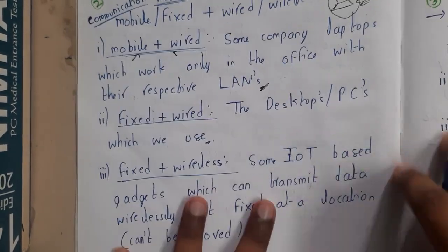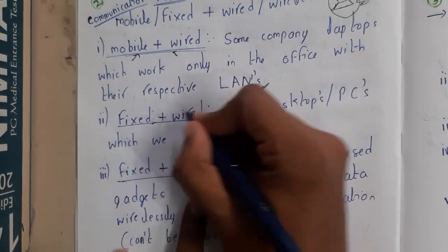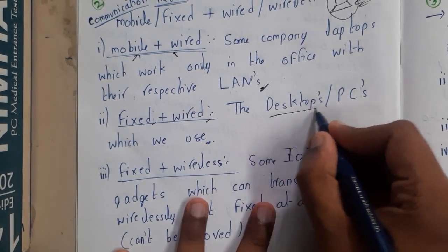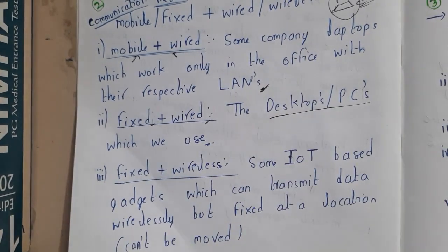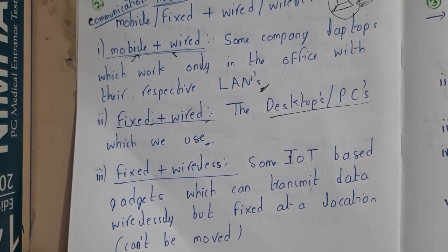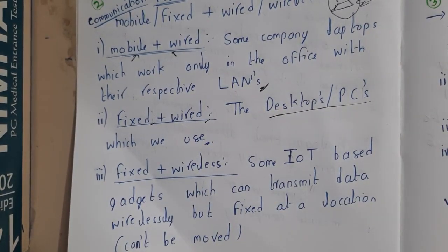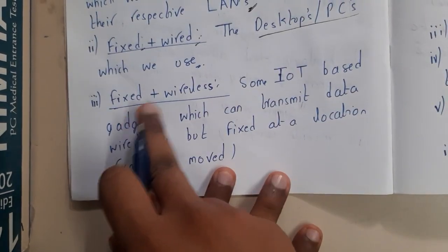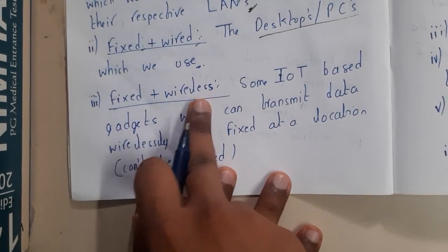Similarly, fixed and wired — the best example for this is your PC or desktop which we normally use at home.